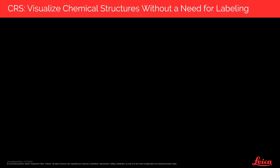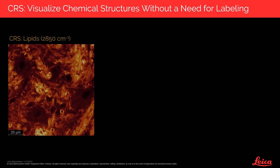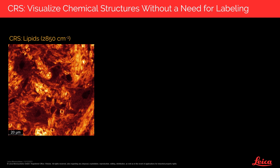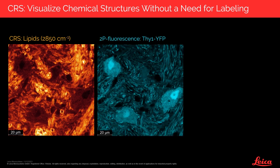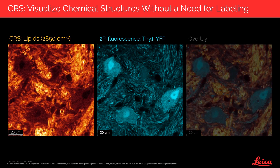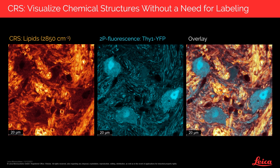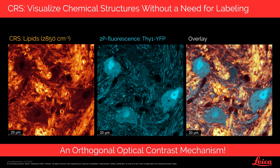Why should you care about Coherent Raman Scattering? It is because you can visualize chemical structures without a need for labeling. In this brain slice, we can visualize all the lipid molecules based on a characteristic vibration of their molecular bonds. We can see that these lipids are mostly localized to the myelin sheets wrapped around the axons. The neurons are additionally labeled with a yellow fluorescent protein, and we can clearly see that the fluorescent signals and the lipid signals mark totally different parts of the neurons. In the overlay, there is no crosstalk between these two types of signals. So CRS really provides an orthogonal contrast mechanism and you can make structures visible that have been invisible before.